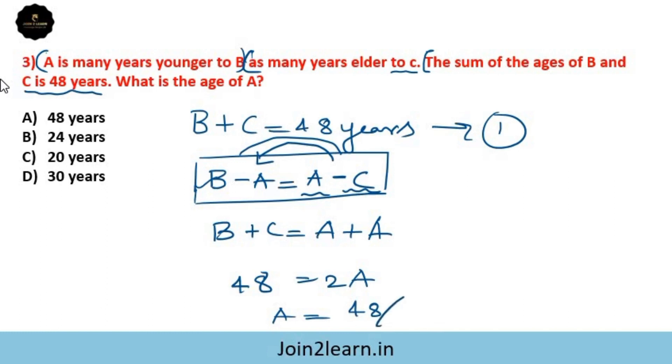Since B plus C equals 2A and B plus C equals 48, we get 2A equals 48. Therefore A equals 48 divided by 2, which is 24. Option B is the right answer.